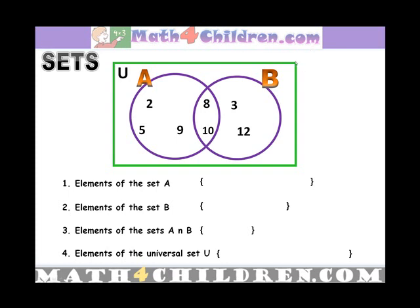Now this is a universal set represented by the letter U. Within that universal set we have two circles.